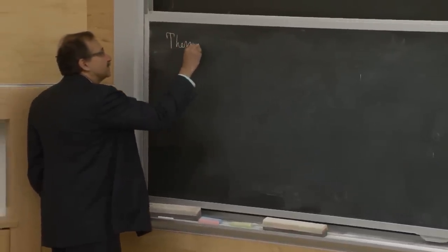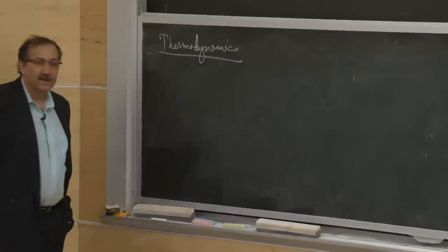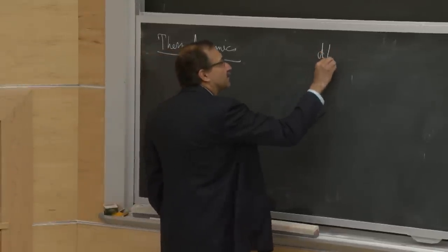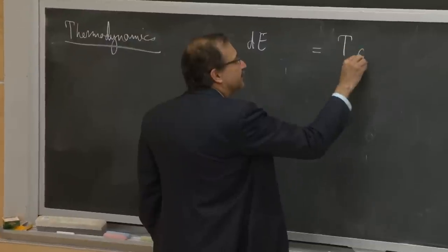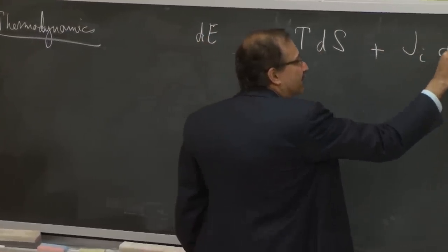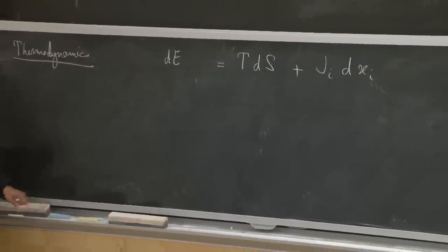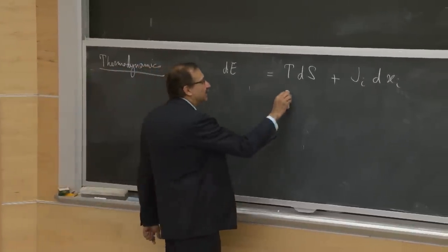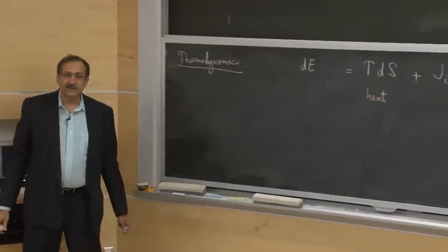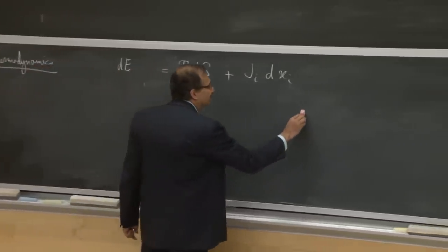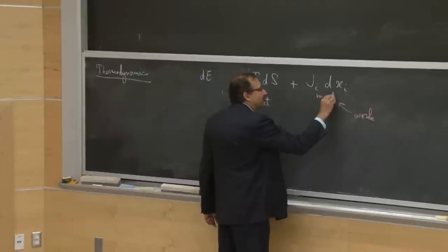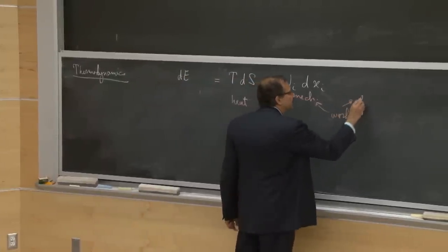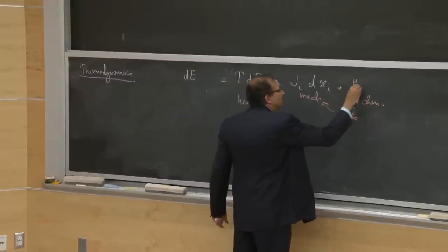We've been gradually building up thermodynamics, culminating in what I call the most important fundamental relation, which was dE = T dS + Ji dXi. Essentially, we said that this was some statement of conservation of energy, where there's a heat component that goes into the system and there's a work component. We ended up breaking the work component into a mechanical part and a chemical part, which we wrote as μ_α dN_α.